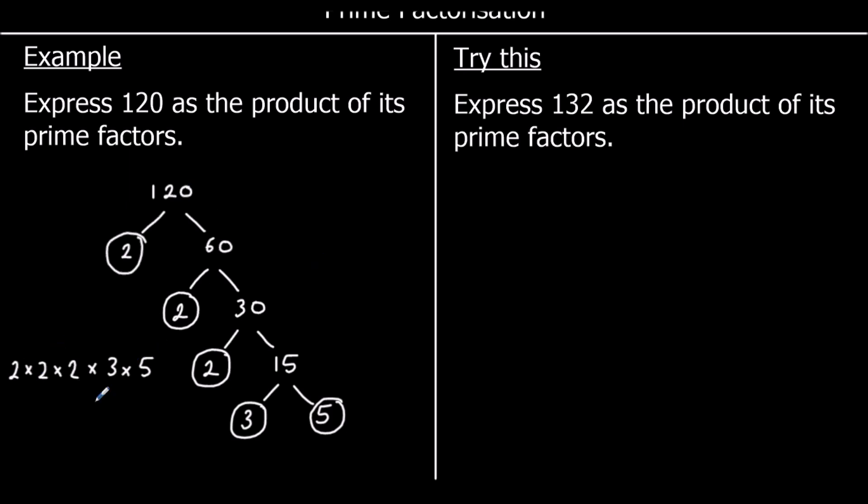We can also write this in a different way. Because we've got 2 times 2 times 2, we can change that to 2 cubed. So I can have 2 cubed times 3 times 5. We don't have to do that. Either one of these are correct.